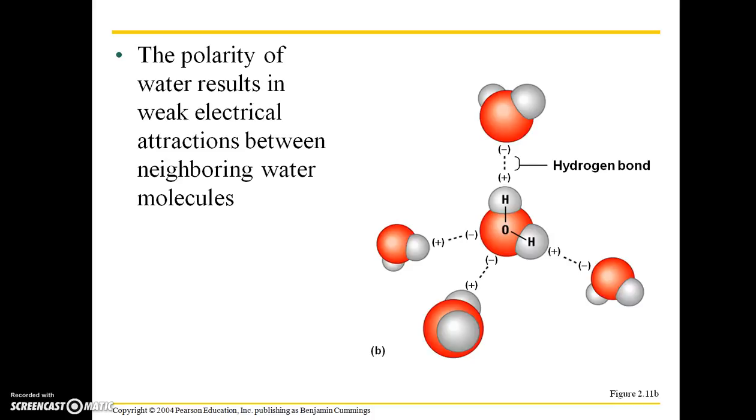The polarity of water results in weak electrical attractions between neighboring water molecules. Remember that phrase again, opposites attract. We're going to have oxygen atoms of a neighboring water molecule having a slight negative charge, and hydrogen atoms of a water molecule having a slight positive charge. That is going to create a hydrogen bond here between these neighboring water molecules.